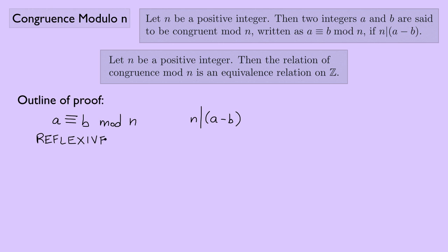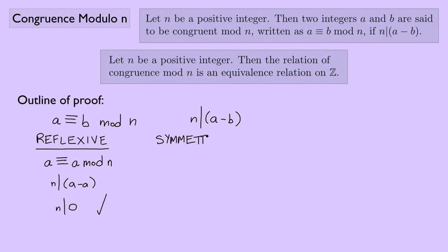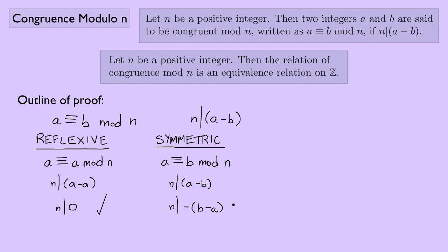First, reflexive: we need to show a ≡ a (mod n). Rewriting in terms of division, that says n divides a minus a, or n divides 0, which is of course true. Next, symmetric: suppose a ≡ b (mod n). We need to show b ≡ a (mod n). This means n divides a minus b, which is the same as n dividing negative(b minus a), so b ≡ a (mod n).